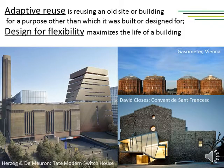Some important terminology concerning sustainable conversions: adaptive reuse is a process of reusing an old site or building for a purpose other than which it was built or designed for. Here we must be aware of local building regulations and heritage preservation regulations if those exist for a particular building. When designing something new, we should always design for flexibility and desirability to maximize the building's life.